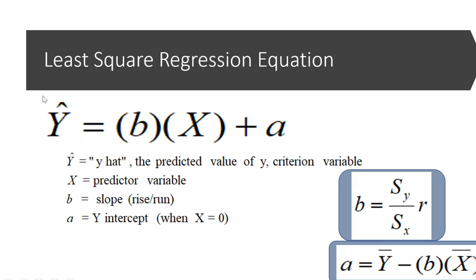The slope is built by the correlation, with the standard deviations putting it in proper units. The other magic of the least squares regression model is that the line always goes through the mean of x and the mean of y. Knowing that one point the line crosses, you can backwards solve for the y-intercept. The calculation of the slope and the y-intercept together are what make the least squares regression model work.